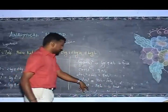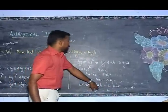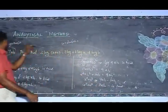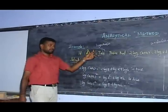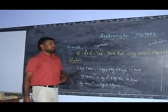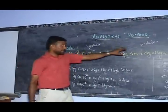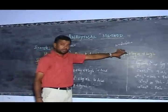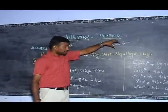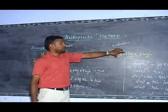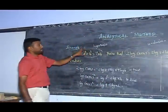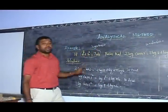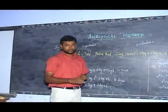Then A squared plus B squared equals 7AB is the hypothesis — the hypothetical part. Therefore, first I took the conclusion part, and with the conclusion part I was able to solve and prove the hypothetical part. This is an example of the analytic method.